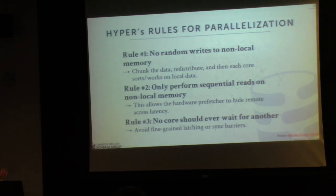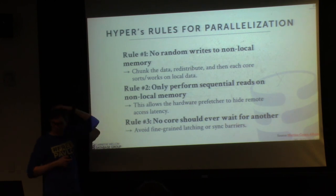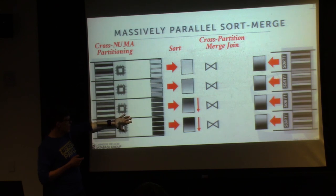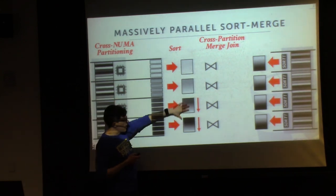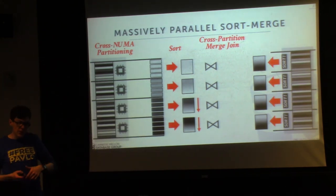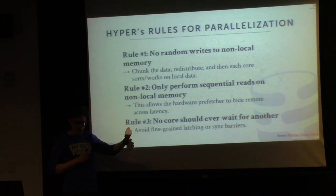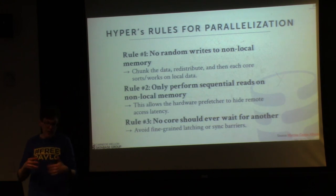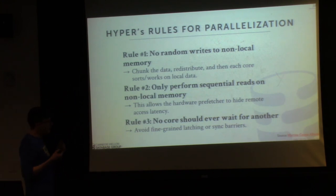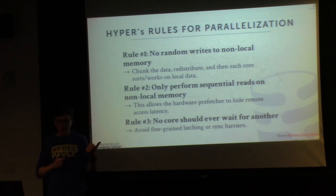The Hyper paper provides three rules for the correct way to implement sort-merge algorithm. First, you don't want any random writes to non-local memory — after the initial partitioning redistribution, you don't write to any remote data in subsequent steps. Second, if you do a sequential scan on non-local data, the hardware prefetcher will automatically bring that over and hide the access latency of reading things that are far away. Third — as discussed before with partitioning and hash joins — you never want cores to synchronize with each other; ideally they operate on local data without worrying about synchronizing with anybody else.